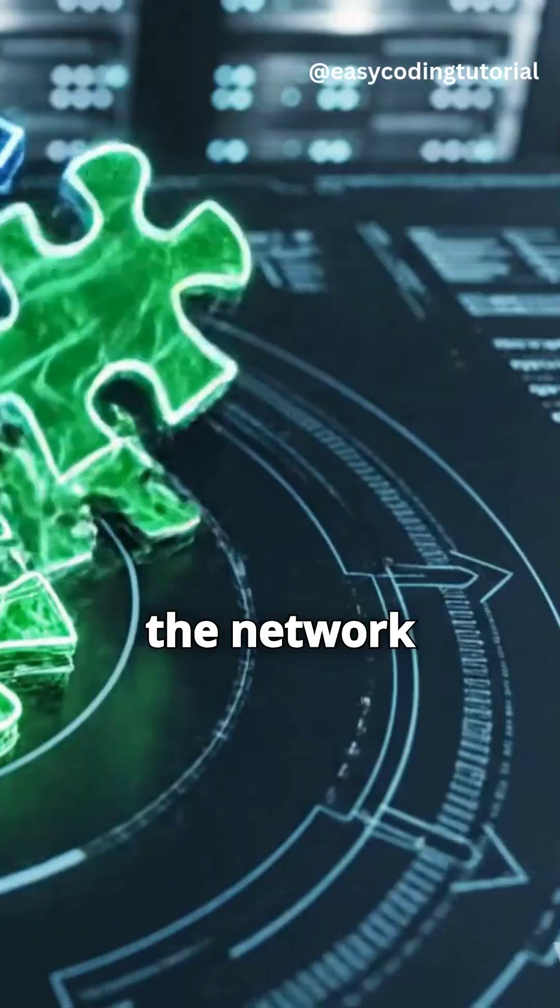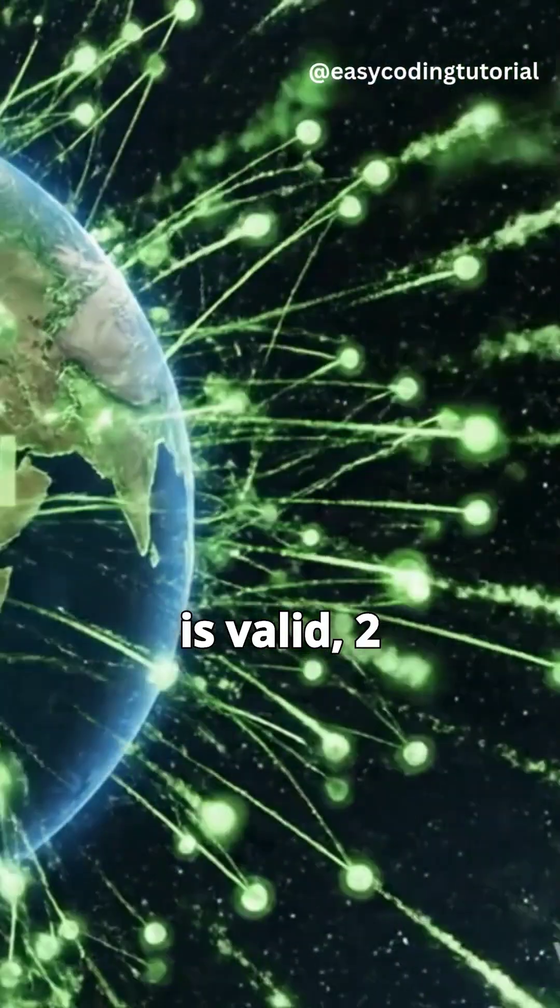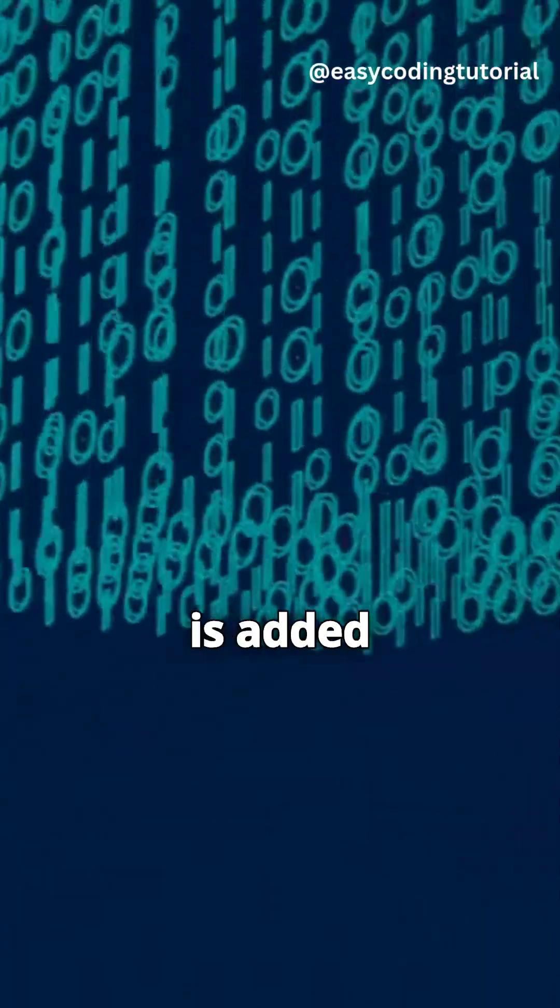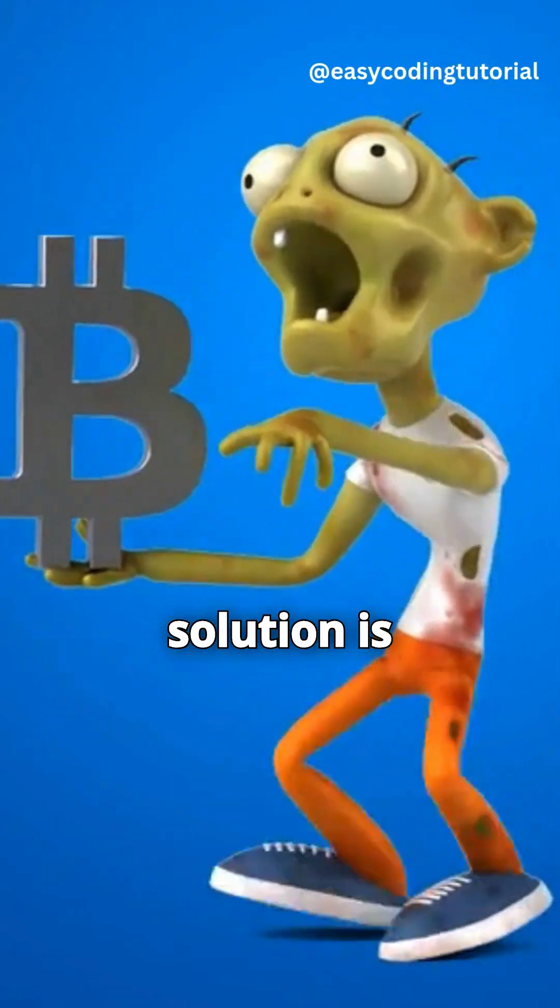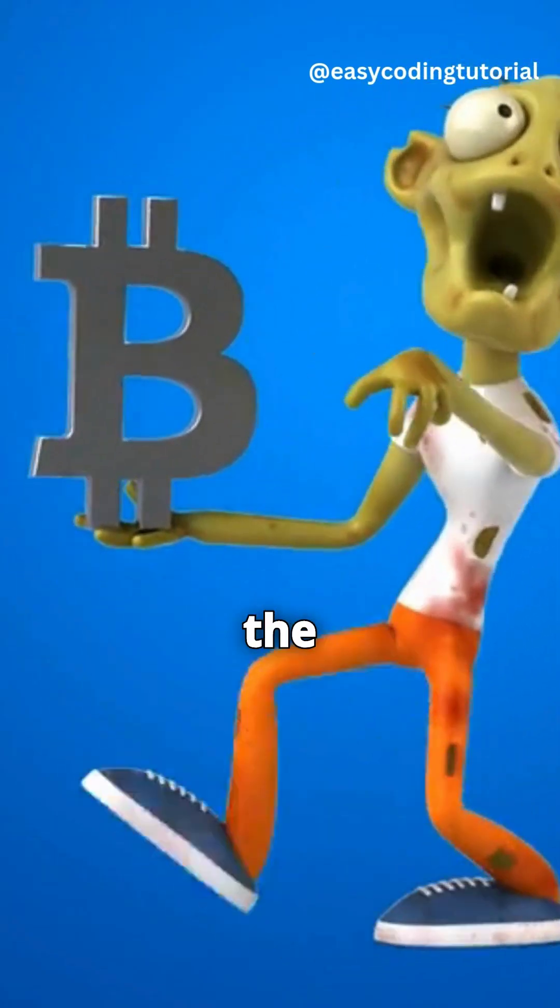The reward. When the rest of the network verifies that the solution is correct and that the block of transactions is valid, two things happen. The new block is added permanently to the chain. The ledger is updated. The miner who found the solution is rewarded with newly minted Bitcoin, plus the transaction fees.